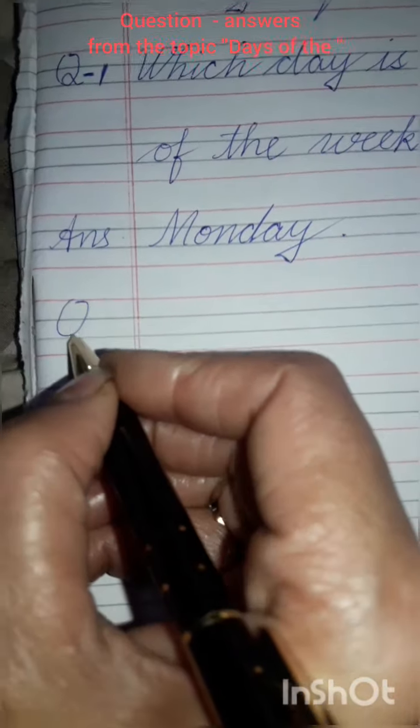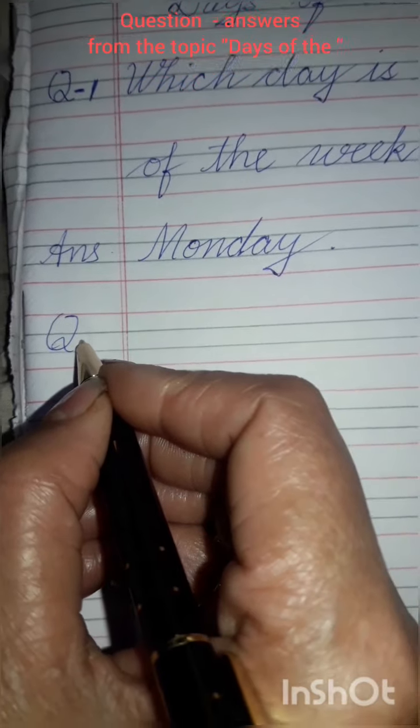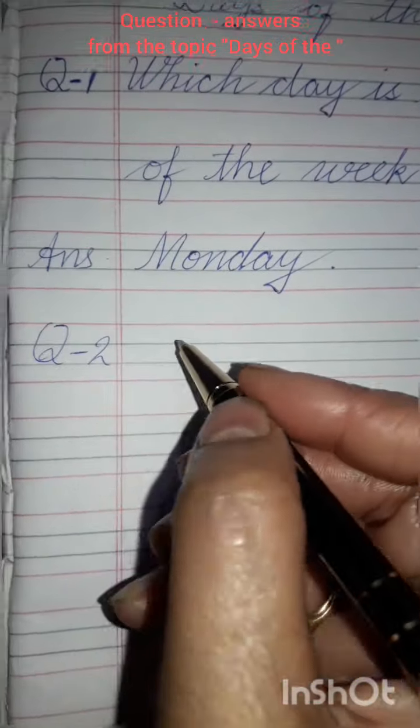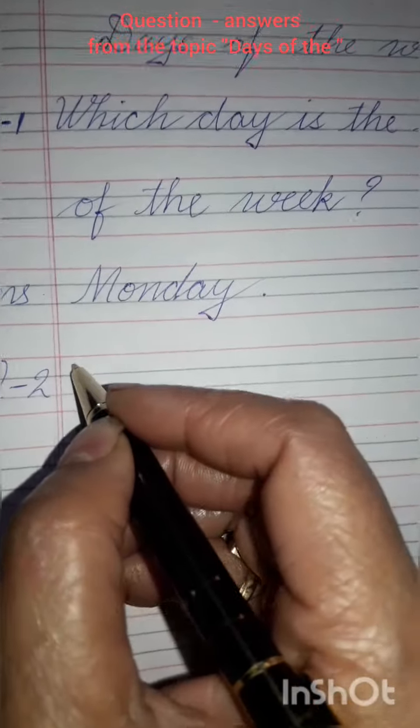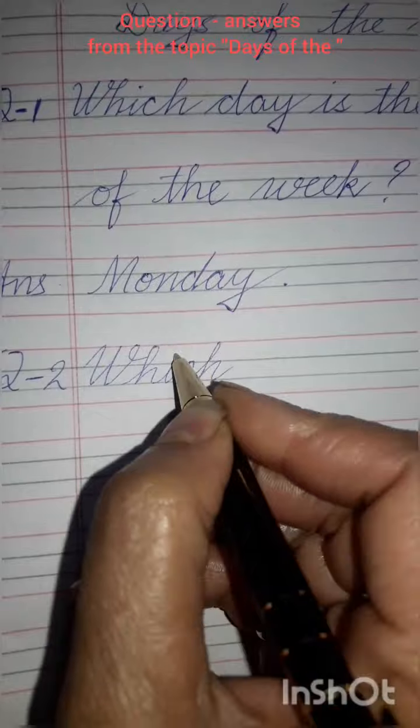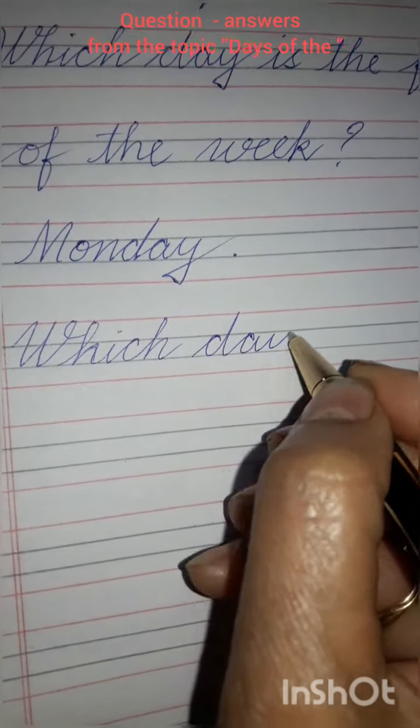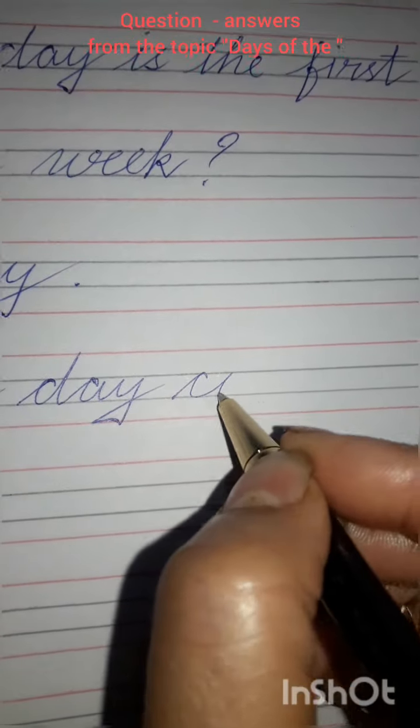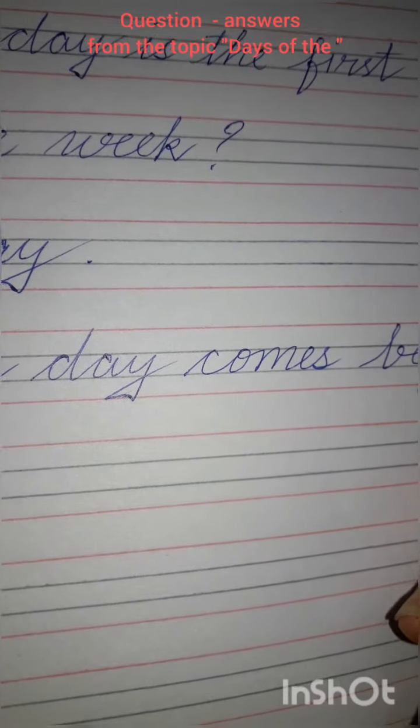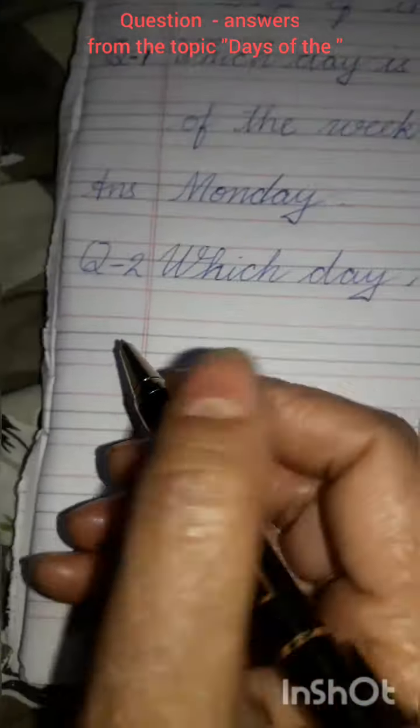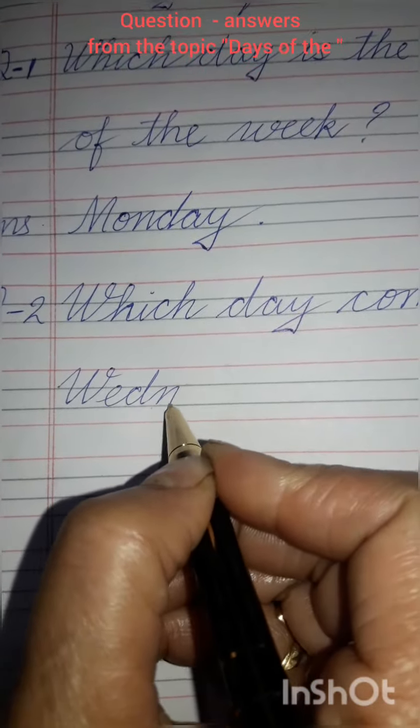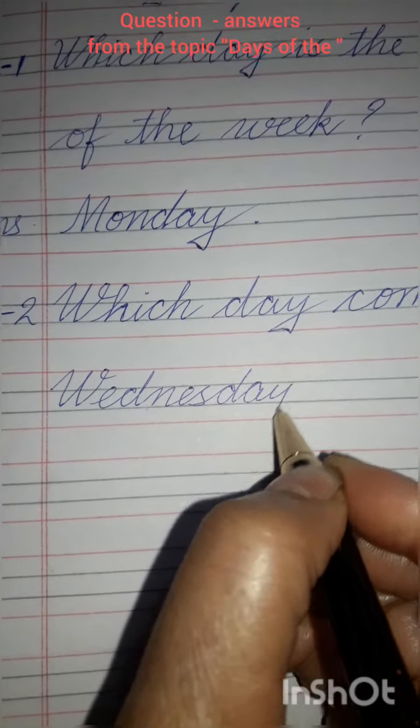Then write question number 2 and short form of question. We will write Q here and then put a dash and write down 2. Then you will write W-H-I-C-H. Which day comes before Wednesday?